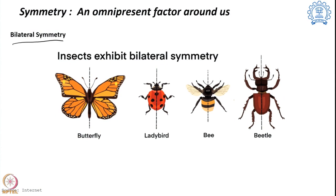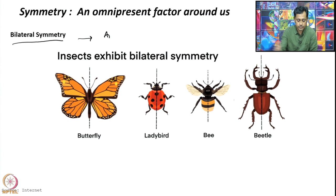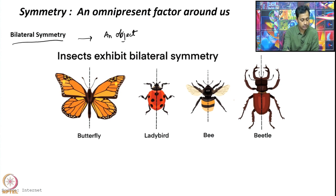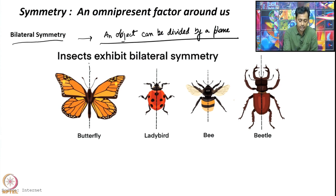We will go into a little more detail of each symmetry. First, let us try bilateral symmetry. Bilateral symmetry is a symmetry when an object can be divided by a plane and on the other side of the plane we see similar parts. For example, here is the butterfly and here is the plane.